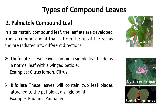The other type of compound leaf is the palmately compound leaf. In a palmately compound leaf, the leaflets are developed from a common point — the tip of the petiole — and radiate in different directions like the fingers of a palm. Each leaflet is part of an individual lobe. This may lead to confusion between the palmately compound leaf and a simple leaf arrangement, but remember: palmately compound leaves do not have a rachis, as each leaflet branches out directly from the petiole.